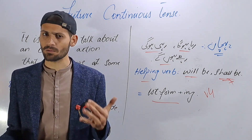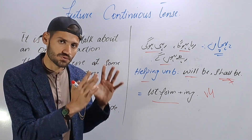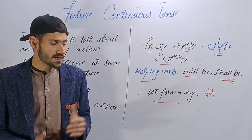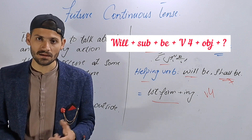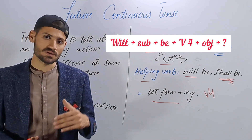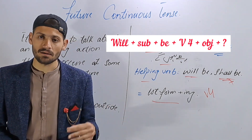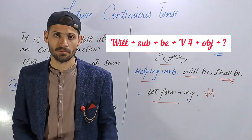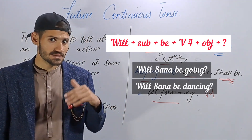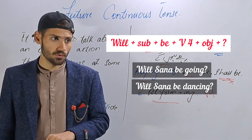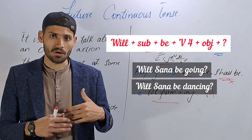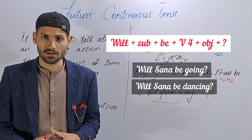For the interrogative structure, the helping verb comes first at the start of the sentence. The structure is: Will + Subject + be + V+ing + object + question mark. For example: 'Will Sana be going?' 'Will Sana be dancing?' 'Will I be going?' 'Will they be playing football?' 'Will they be going to school?' 'Will they be driving a car?'